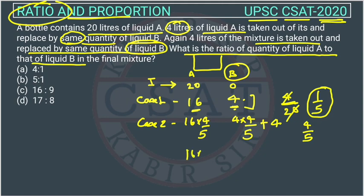So this is 16, 4 by 5. So this will be how much? This is 16. This will go 20 upon 5. So we have to find the ratio. So 5 will cut this 5. So this will be 16 into 4. Ratio is 36.